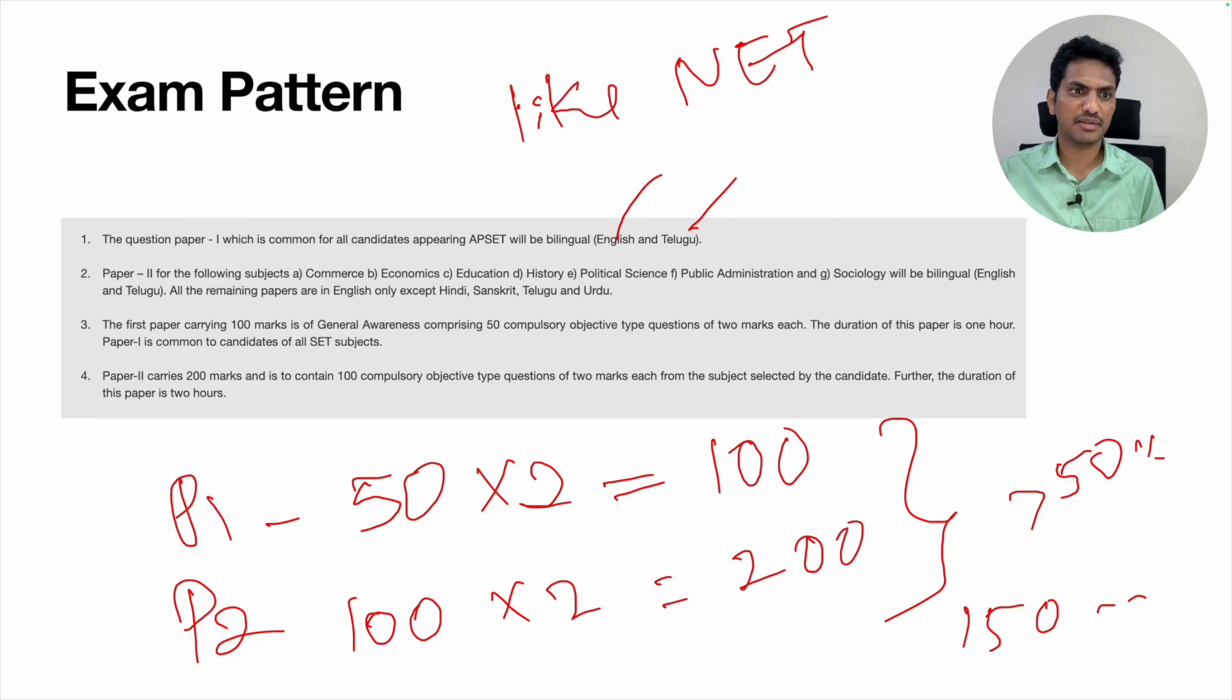For first paper, both languages - Telugu and English. For some subjects there are also giving bilingual. Look at this: Commerce, Economics, Education, History, Political Science, Public Administration and Sociology will be in bilingual - English and Telugu. Remaining subjects in English only, except Sanskrit and Telugu - they will be giving in that particular language only. It is about the second paper. For second paper also bilingual for the few subjects, for remaining subjects usually science subjects are in English only.